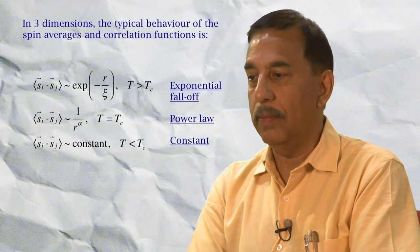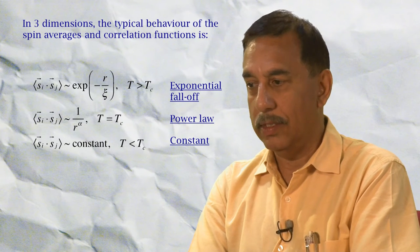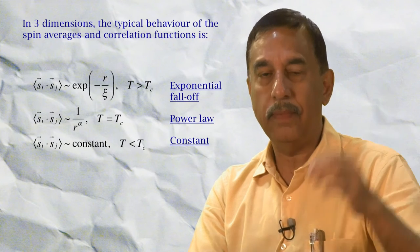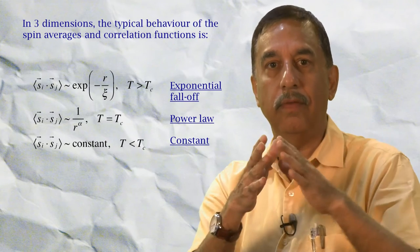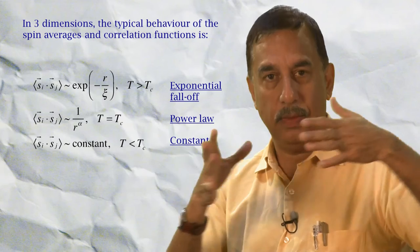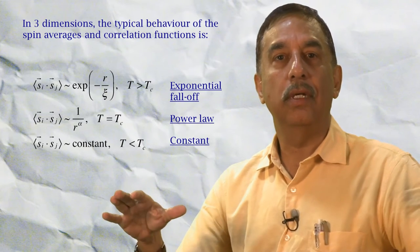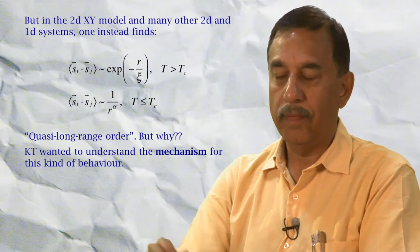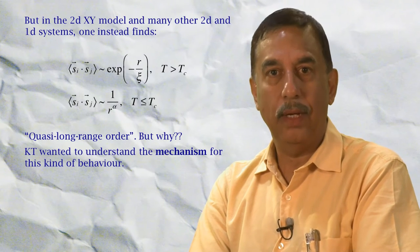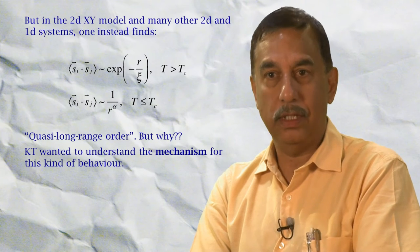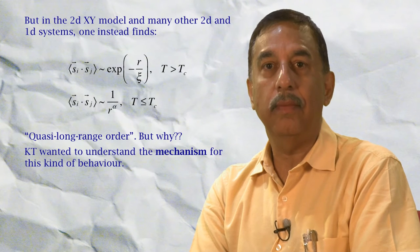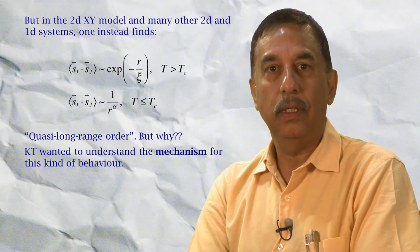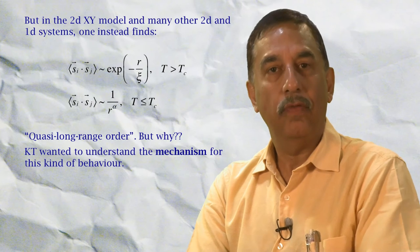In three dimensions, the typical behavior of spin averages and correlation functions is given by these formulas. The two-point function of spins decays exponentially at high temperatures. At a certain critical temperature, it suddenly changes its behavior to a power law, which is a much slower decay as we separate the spins. And then at low temperatures it goes to a constant, reflecting the fact that the spins are all lined up. But by studying two-dimensional XY models numerically and in approximations, it was found that only the high temperature behavior is similar to 3D systems, namely exponential decay. But the low temperature behavior after a certain temperature becomes a power law and it remains a power law for much lower temperatures.